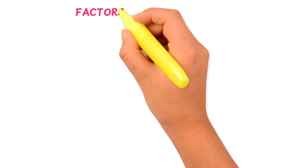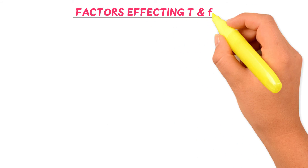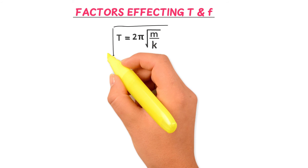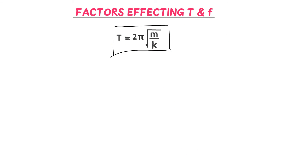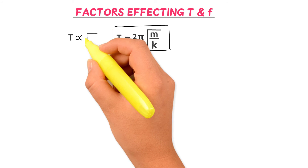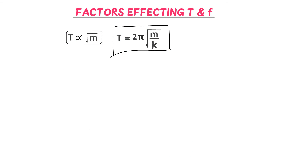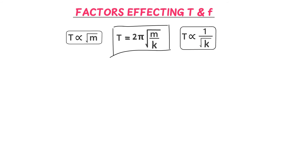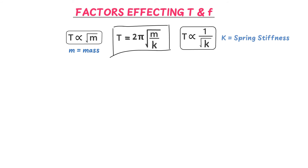Now let me explain the factors affecting time period and frequency. From the equation T = 2π√(M/K), we can see that time period is directly proportional to √M, and time period is inversely proportional to √K, where M is the mass attached to the spring and K is the stiffness of the spring.